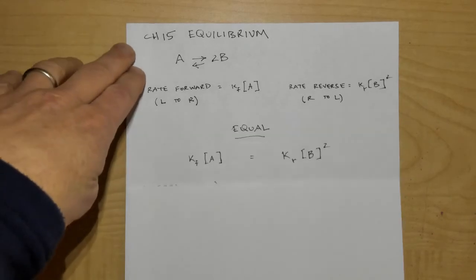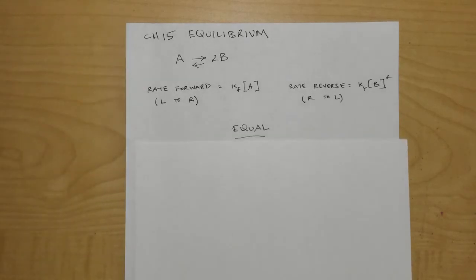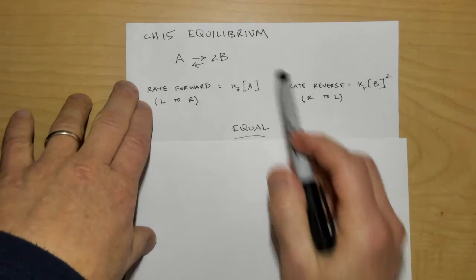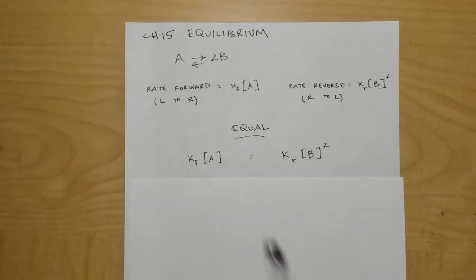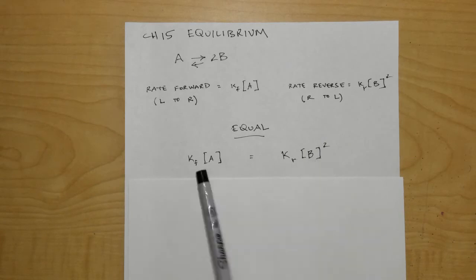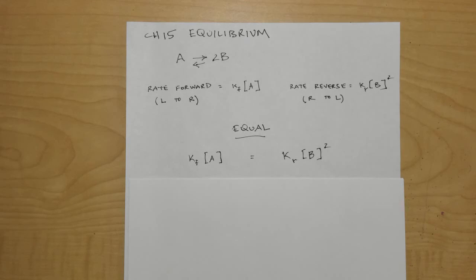We can set these equal to each other, because that's where we're at when we're at equilibrium — the rate of the forward is equal to the rate of the reverse. So K_f times [A] equals K_r times [B] squared. They'll be equal because they're going back and forth — a competition that's equalized.